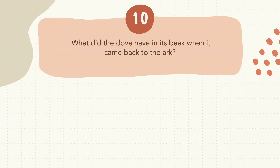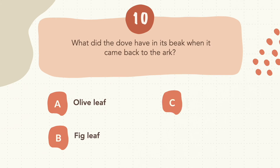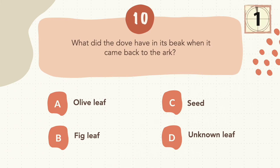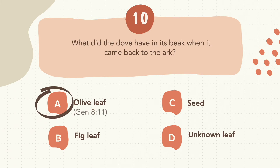Question 10: What did the dove have in its beak when it came back to the ark? The correct answer is A, olive leaf.